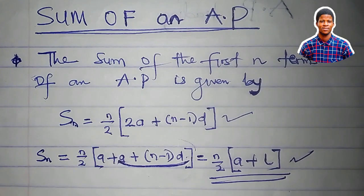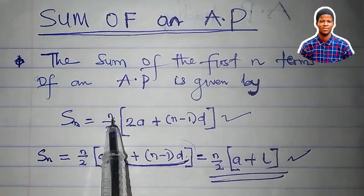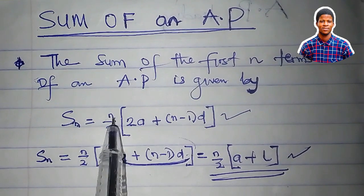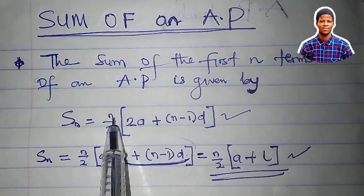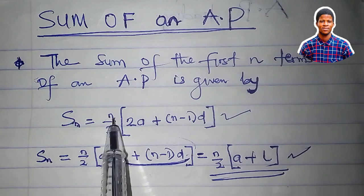For nth term formula, we say that n is the term number, the position of the term. But for sum, n is the number of terms that we are summing.